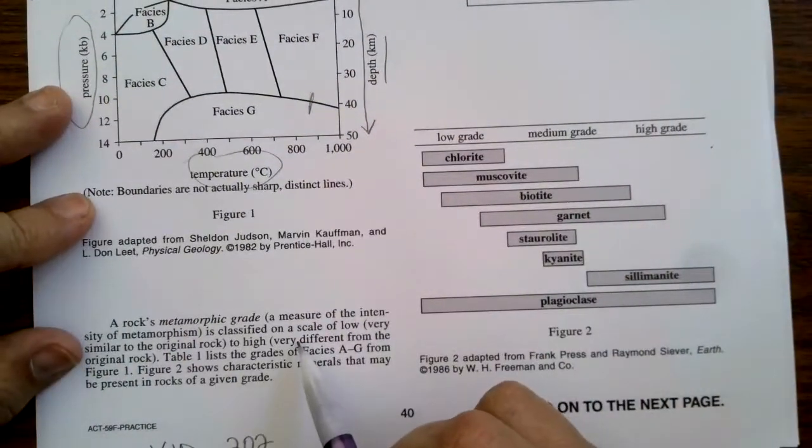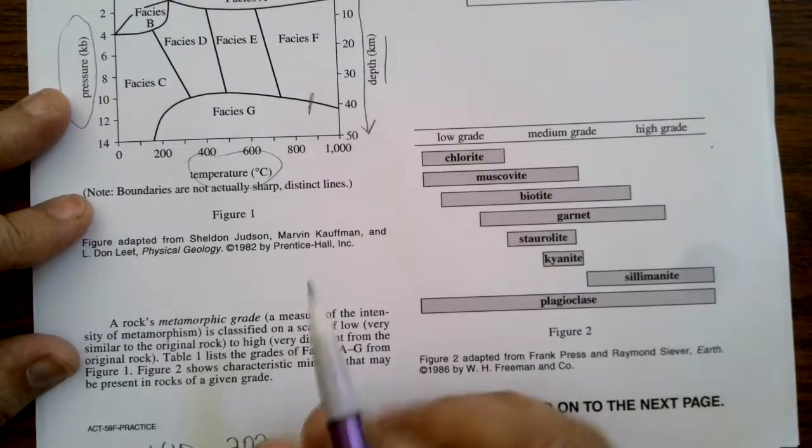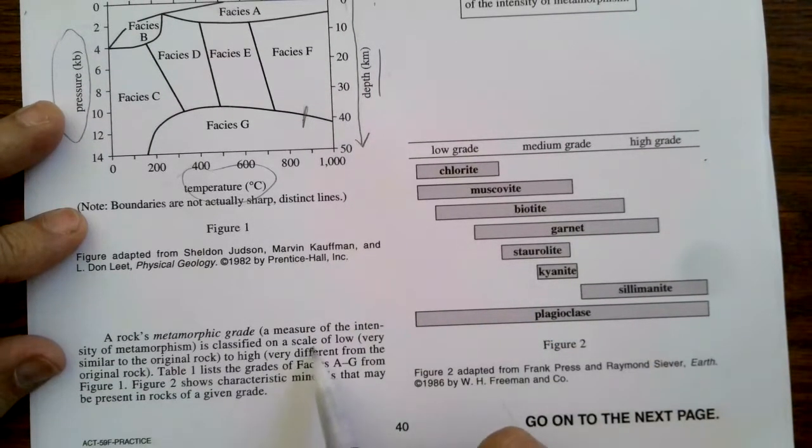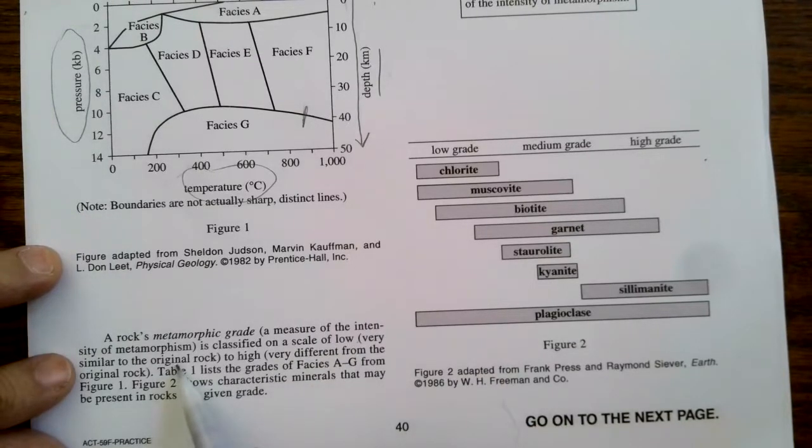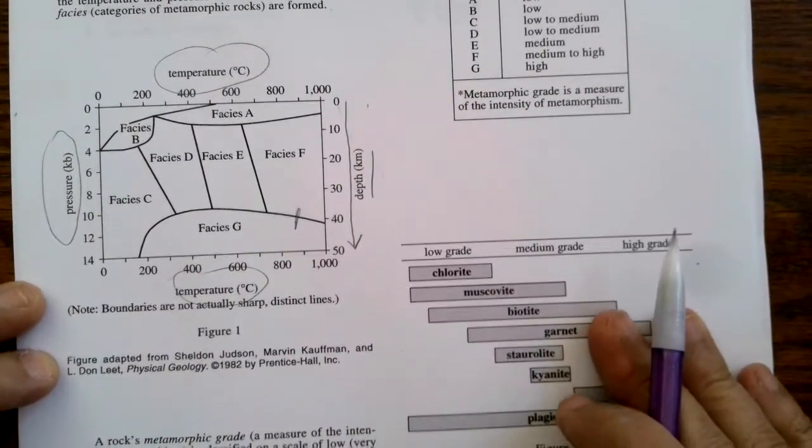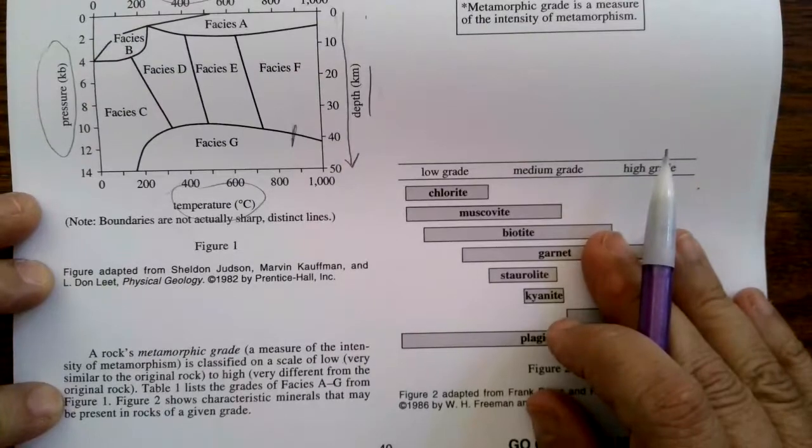A rock's metamorphic grade, a measure of the intensity of metamorphism, is classified on a scale of low, very similar to the original rock, to high, very different from the original rock.